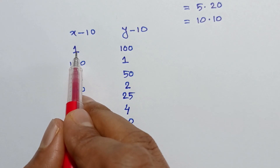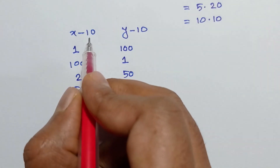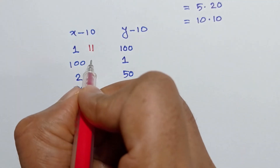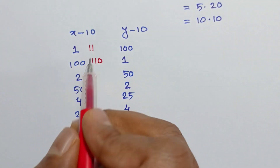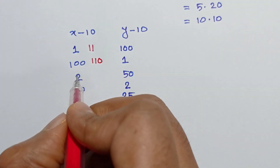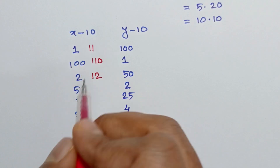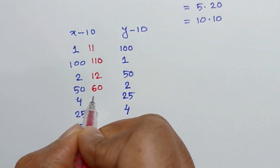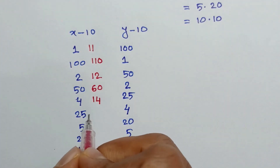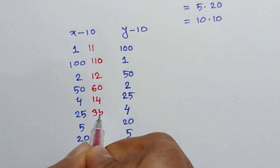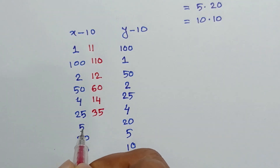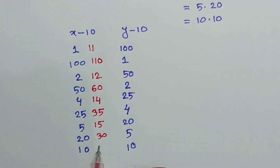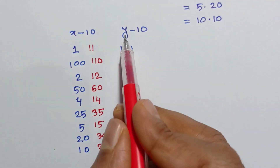Solving for x: when (x minus 10) = 1, x = 11; when (x minus 10) = 100, x = 110; when (x minus 10) = 2, x = 12; when (x minus 10) = 50, x = 60; when (x minus 10) = 4, x = 14; when (x minus 10) = 25, x = 35; when (x minus 10) = 5, x = 15; when (x minus 10) = 20, x = 30; when (x minus 10) = 10, x = 20.